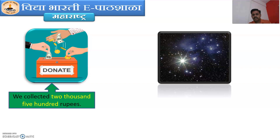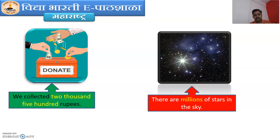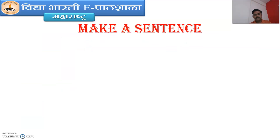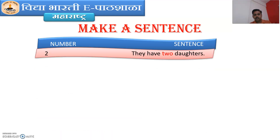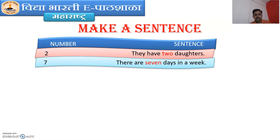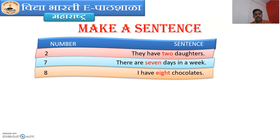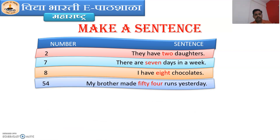There is a picture of stars and there are so many stars in the sky. So the sentence will be: there are millions of stars in the sky. Now let's review: number 2 — they have two daughters. 7 — there are 7 days in a week. Number 8 — I have 8 chocolates. Number 54 — my brother made 54 runs yesterday.